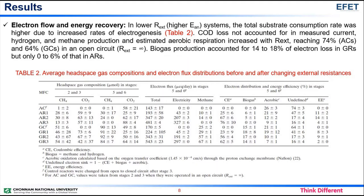Electron flow and energy recovery: In lower external resistance systems, the total substrate consumption rate was higher due to increased rates of electrogenesis, as shown in Table 2. Chemical oxygen demand loss not accounted for in measured current, hydrogen, and methane production, and estimated aerobic respiration increase with external resistance, reaching 74% in acetate-fed control reactors and 64% in glucose-fed control reactors in an open circuit. Biogas production accounted for 14 to 80% of electron loss in glucose-fed reactors but only 0 to 6% in acetate-fed reactors.